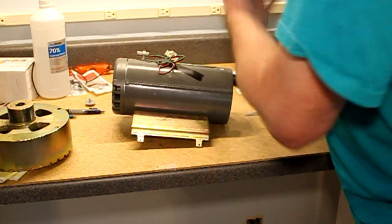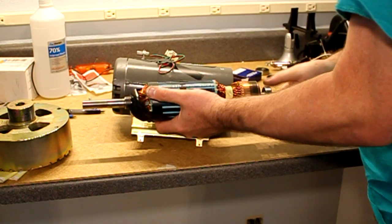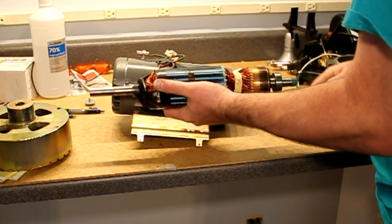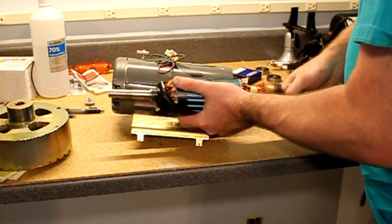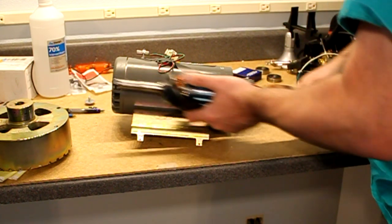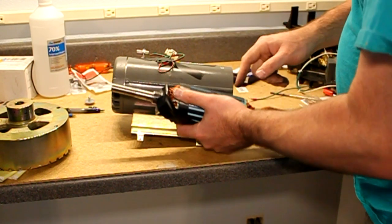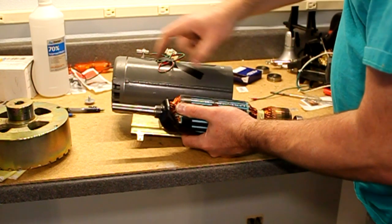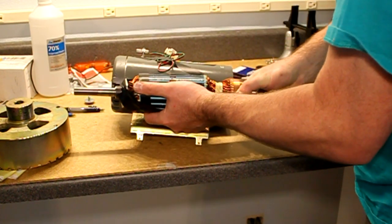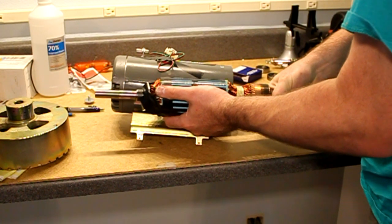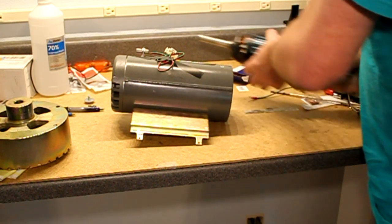Once you get that off, inside is going to be the motor shaft. It's going to feel like there's a spring or something holding on to it when you pull it. It's going to want to pull back. But that's because there's magnets in there, so the magnets really like to hold that thing in the middle, so you just kind of yank on it. It'll come loose and come right out the end.